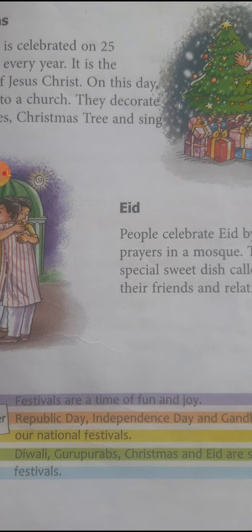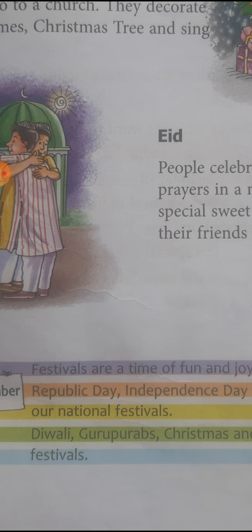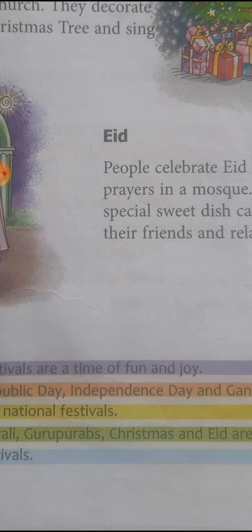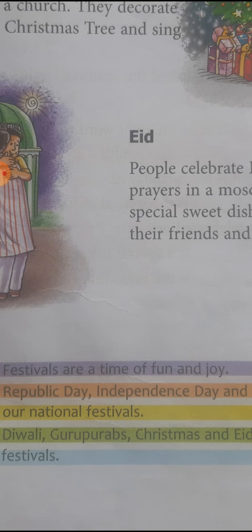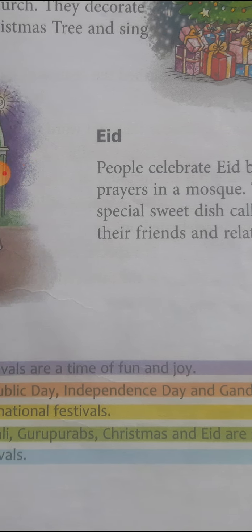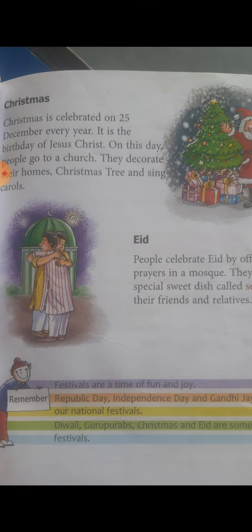Now here are a few points to remember. Festivals are a time of fun and joy. There are two kinds of festivals: national and religious. Republic Day, Independence Day, and Gandhi Jayanti are our national festivals. Diwali, Guru Parv, Christmas, and Eid are some of the religious festivals. In this chapter you have to learn match the following, choose the correct word, and question and answer. I have already sent you the PDF — go through the small points carefully so you don't miss anything.